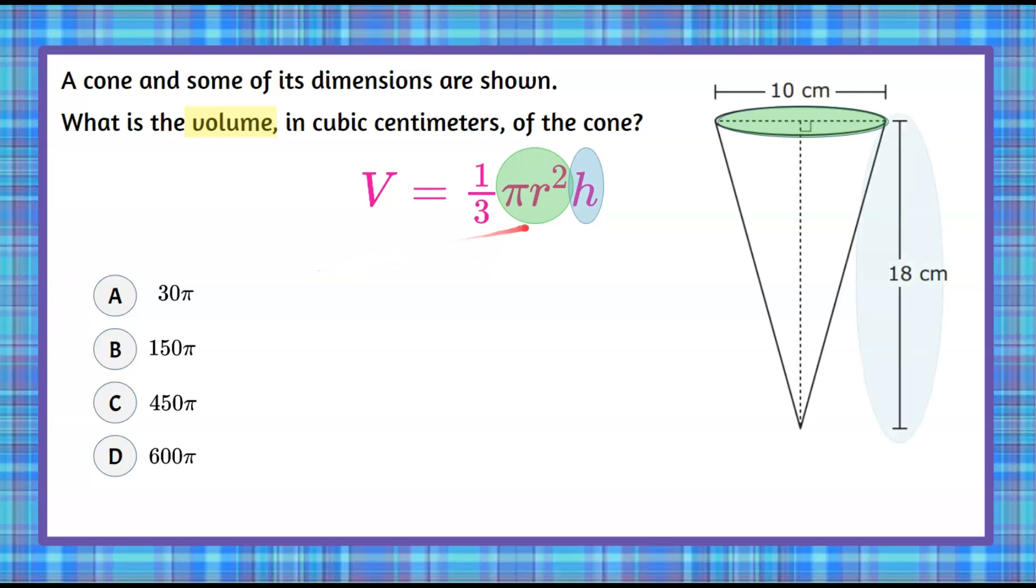Also want to note that we have the height, which is right here, it's labeled. So we know that we're finding the area of our circular base, and we're multiplying by the height, and then multiplying by one-third.